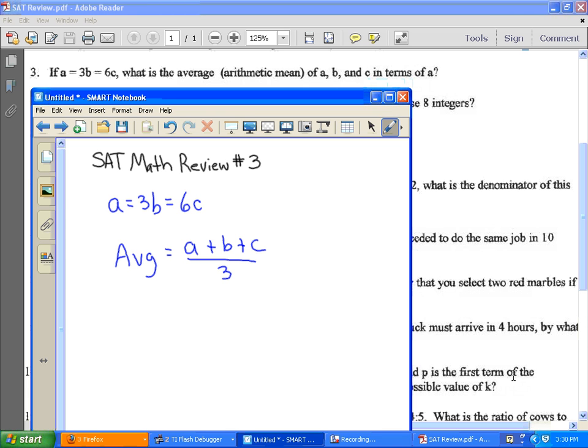And if A is equal to 3B, that means that B is equal to 1 third A. And so I'm going to have A plus 1 third A for B. And what is C? If I divide by 6, C is actually 1 sixth A. And I'm going to divide that by 3.